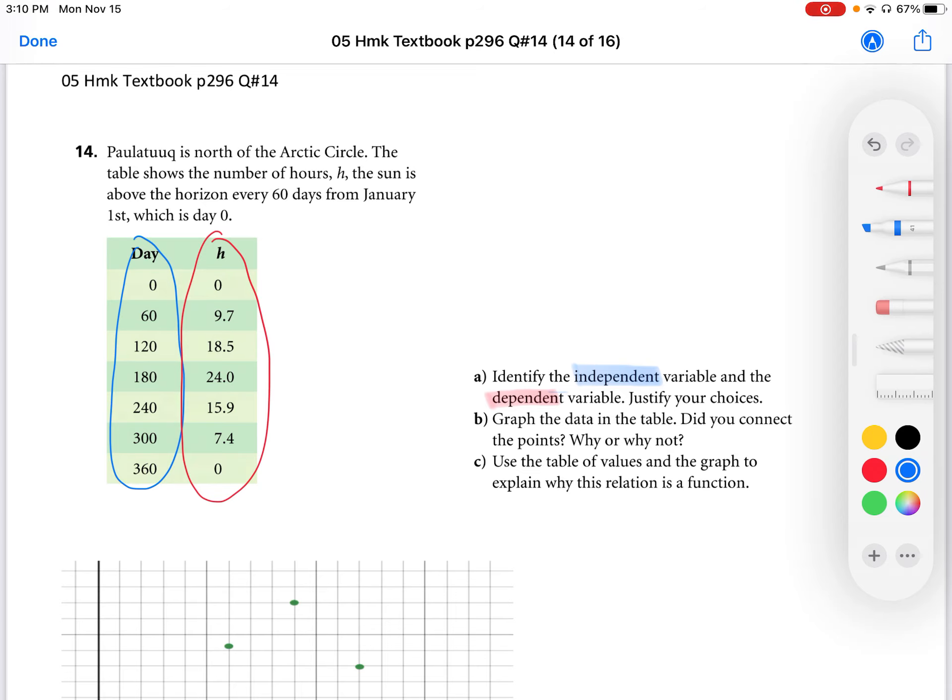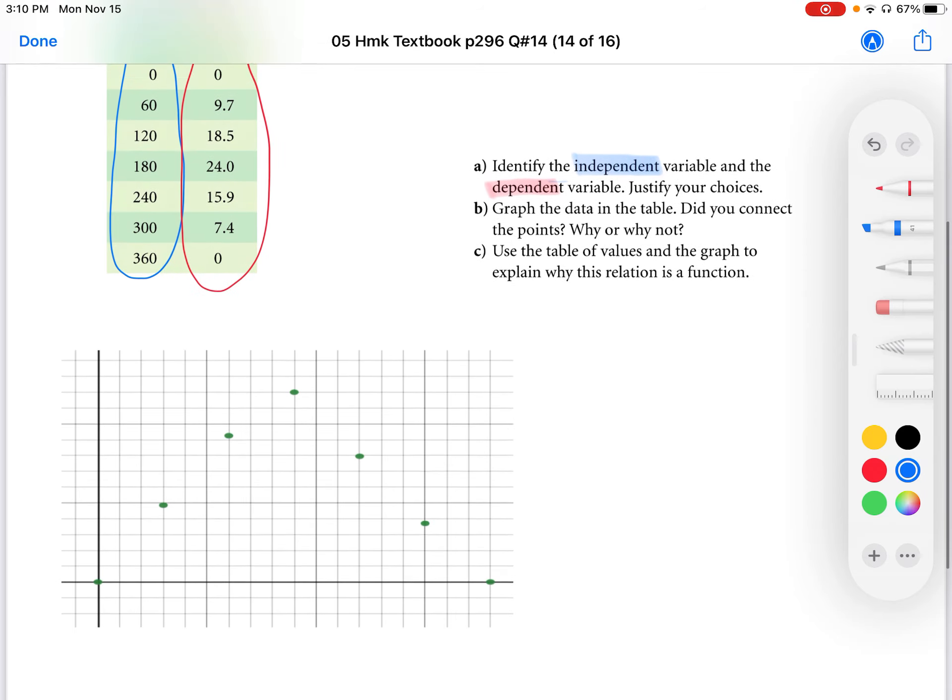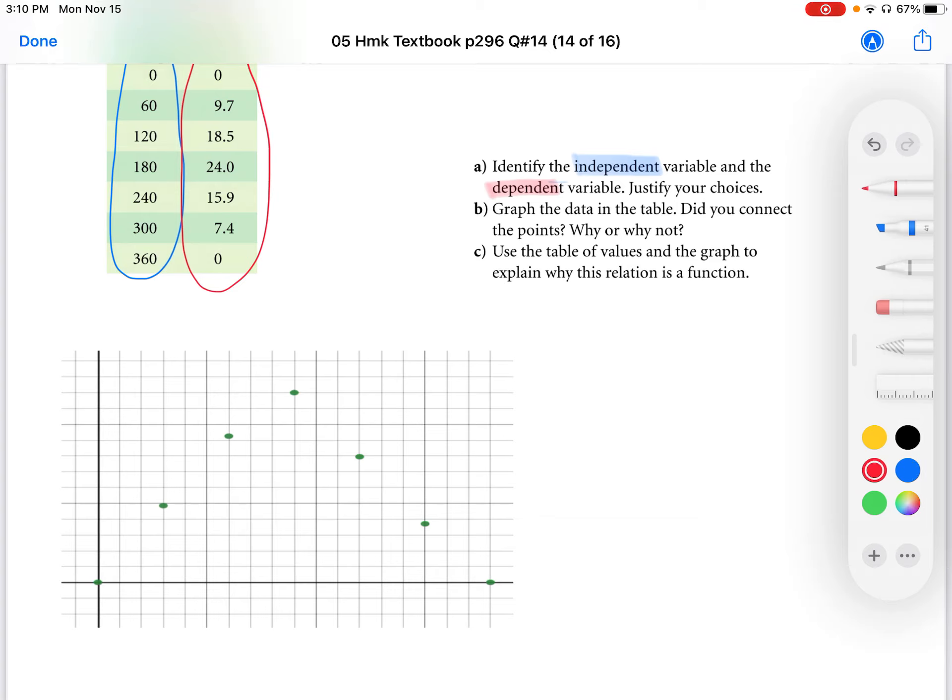Graph the data in the table. Did you connect the points? Well, here's the graph of the data. On the y-axis, we have hours above horizon, and this is day of year. That's 360 days here, and that's going to be 180.